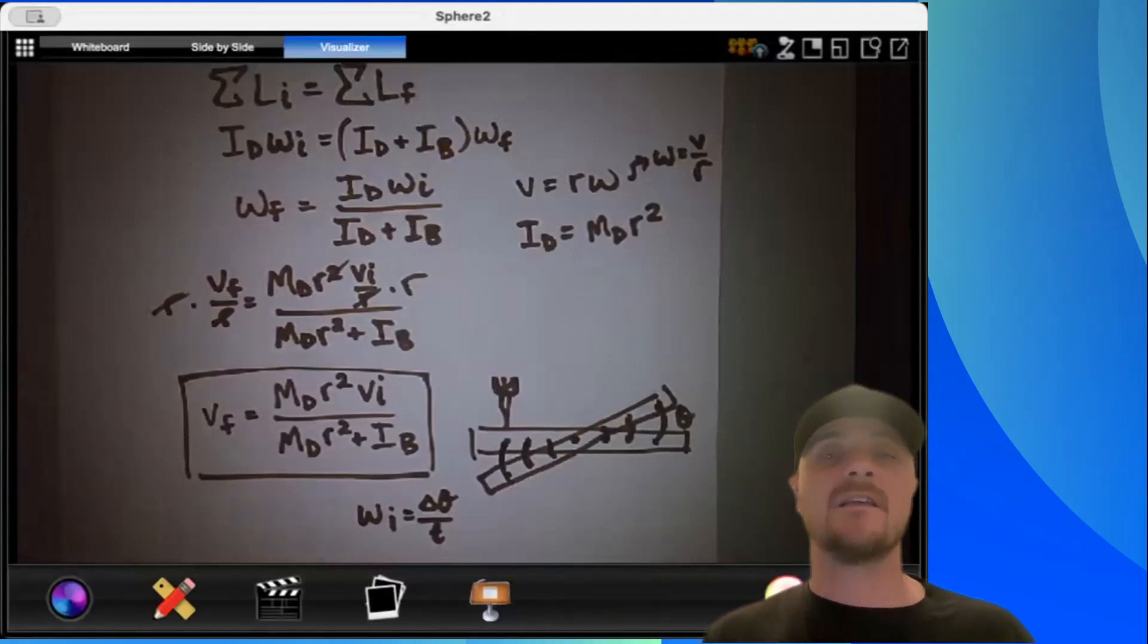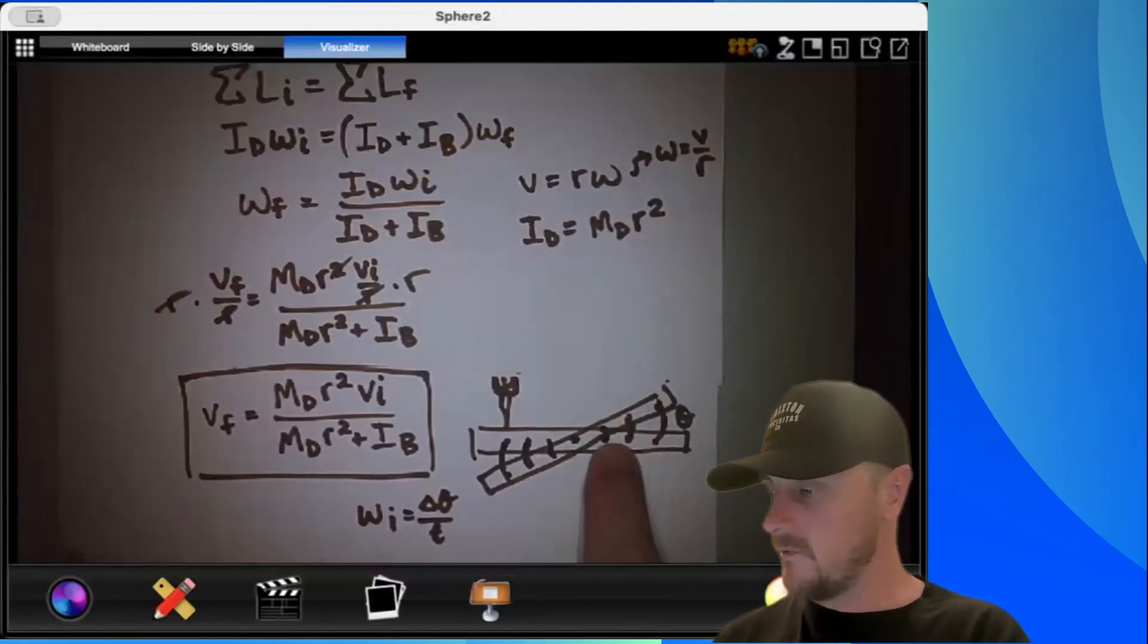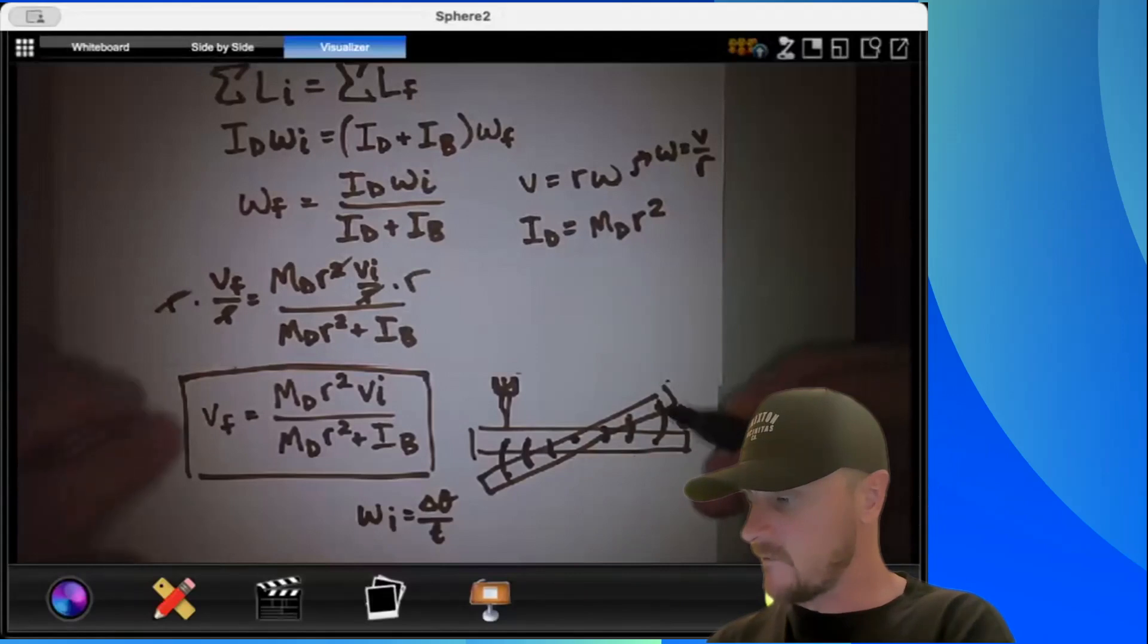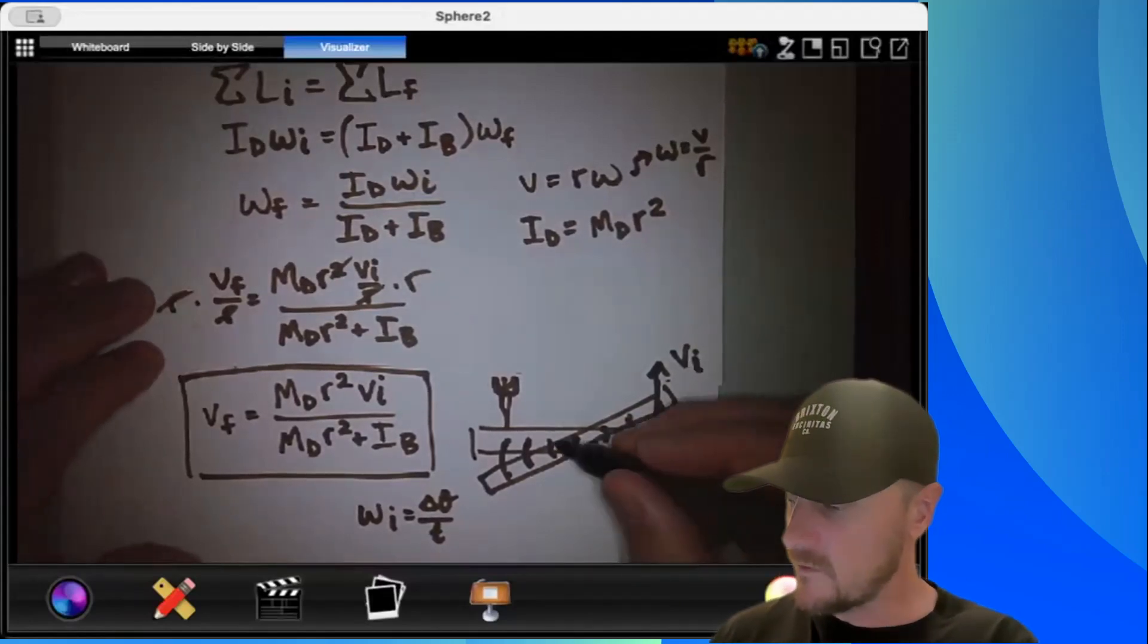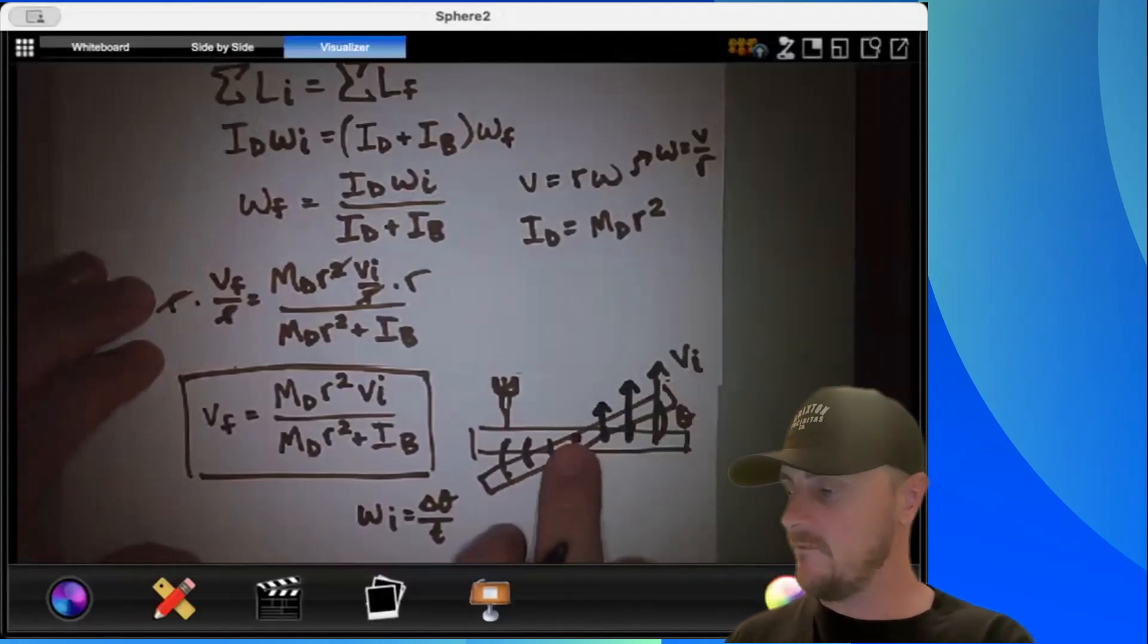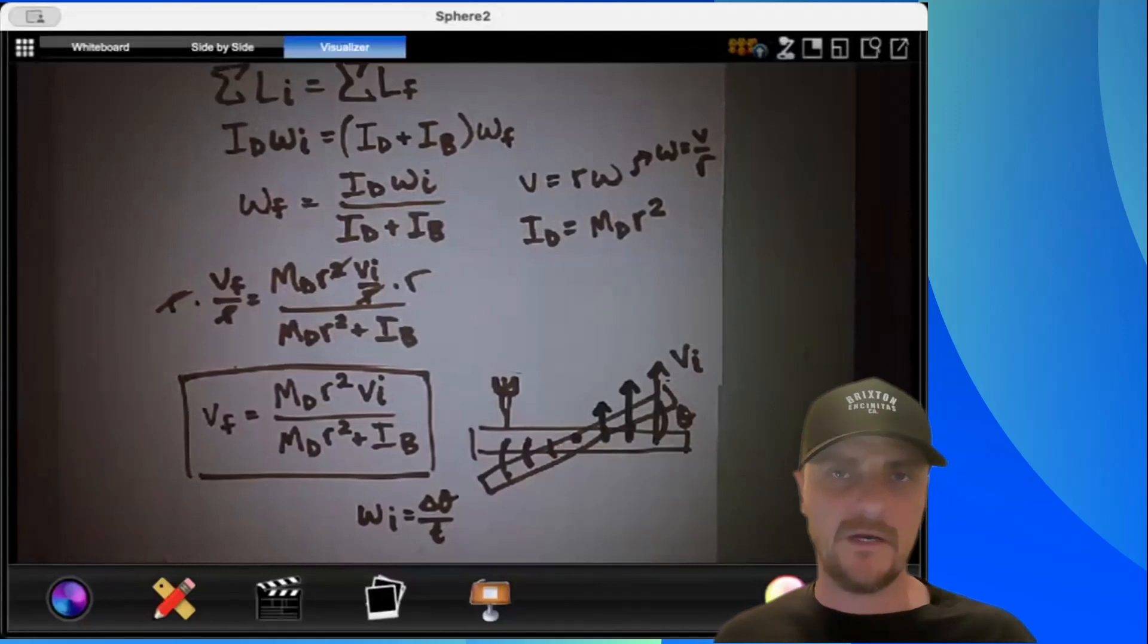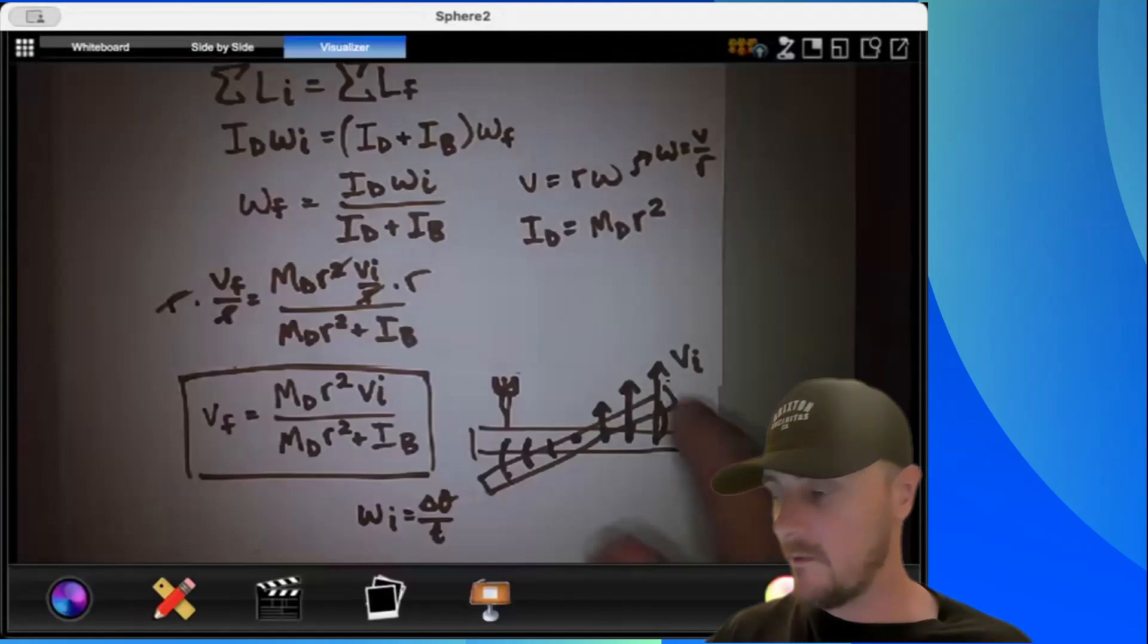However, the linear velocity, which we looked for in this problem, is a lot different. So if I was to look at, say, this point, this point, and this point, when this dart first hits, this point has a big initial linear velocity. But as I go closer to the axis of rotation, my linear velocity is actually less and less. And when you finally get to the middle, there is no linear velocity.